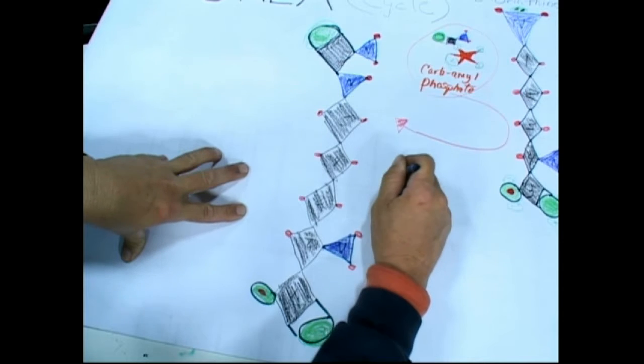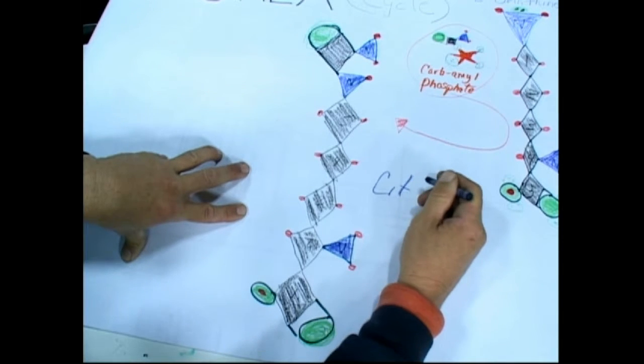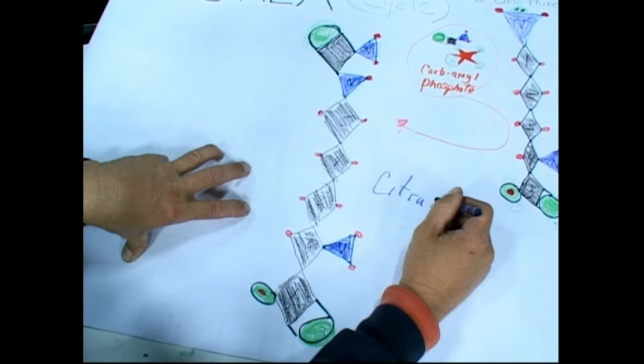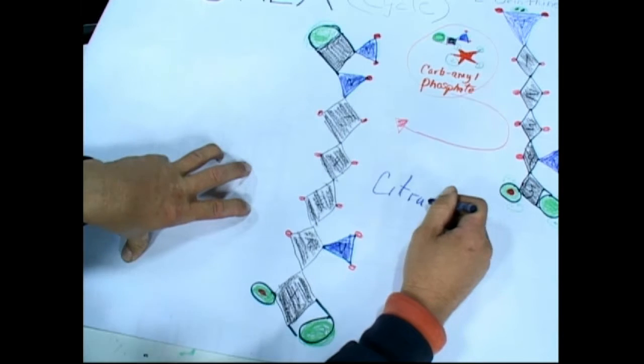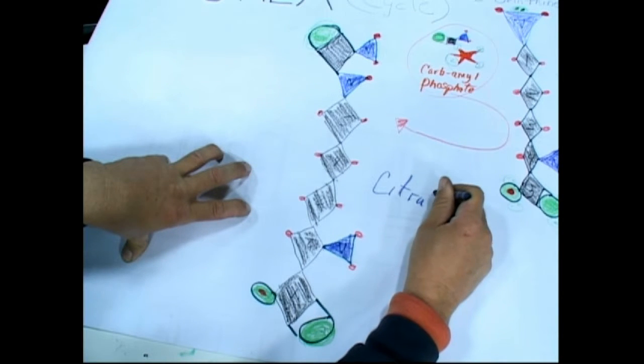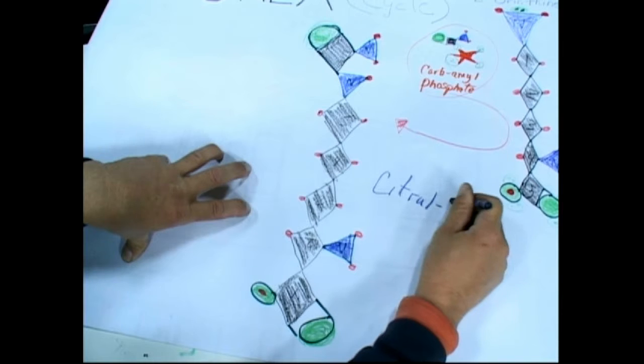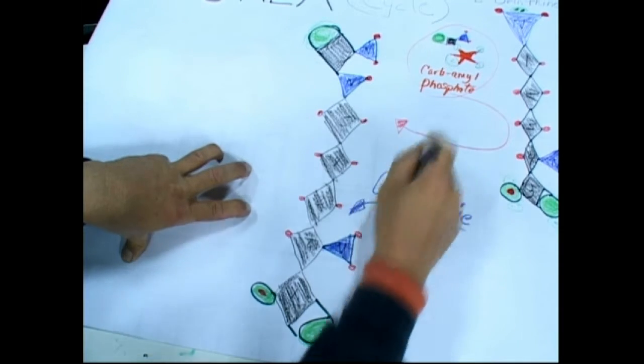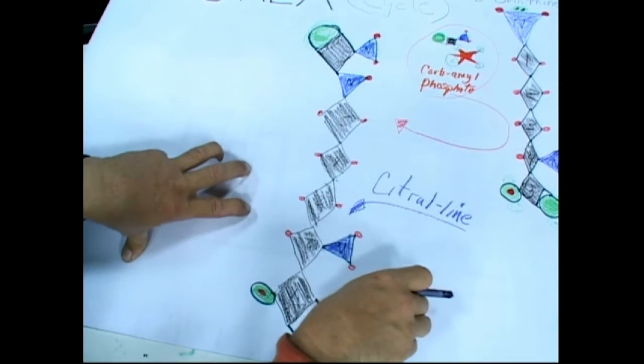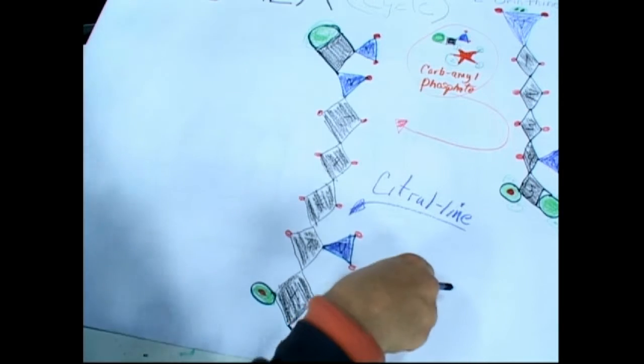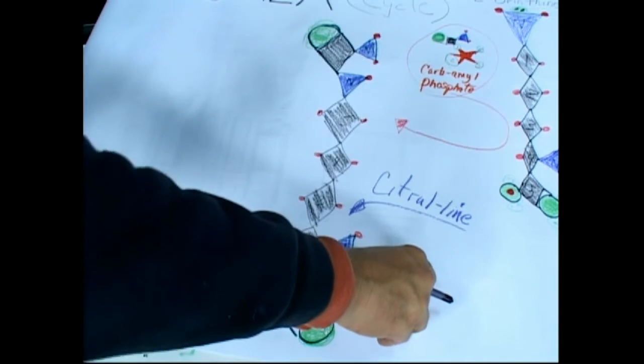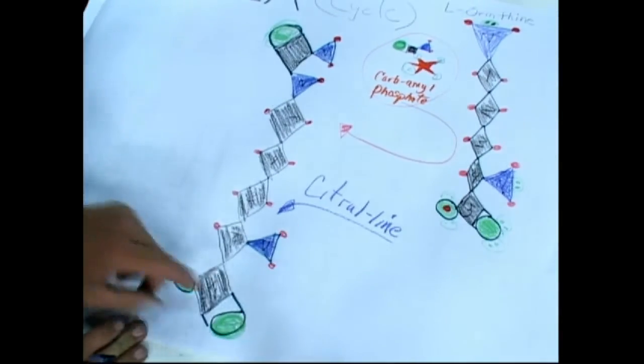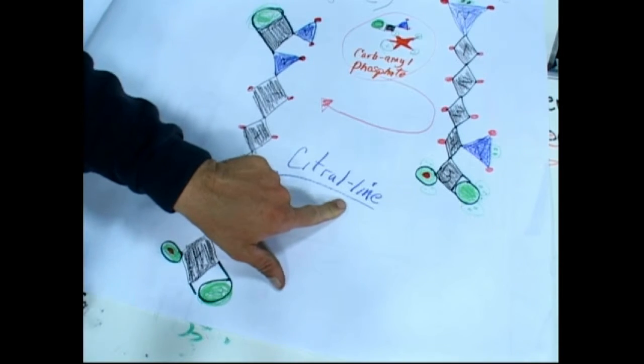It's called citrulline, this is the one that smells like watermelon. Two L's: citrulline. So there was a phosphoryl group that took off, a phosphate however you want to call it.